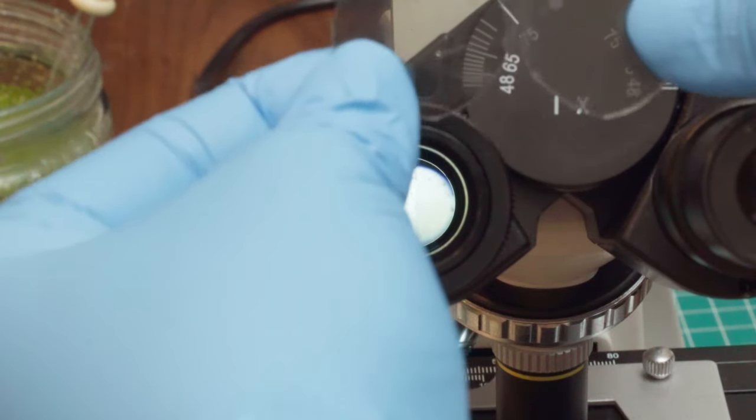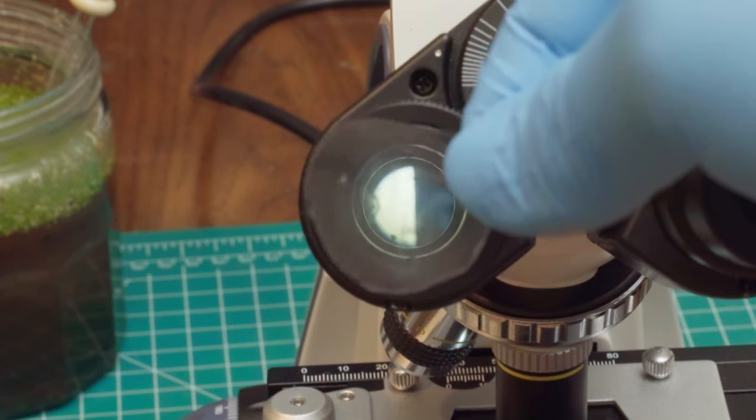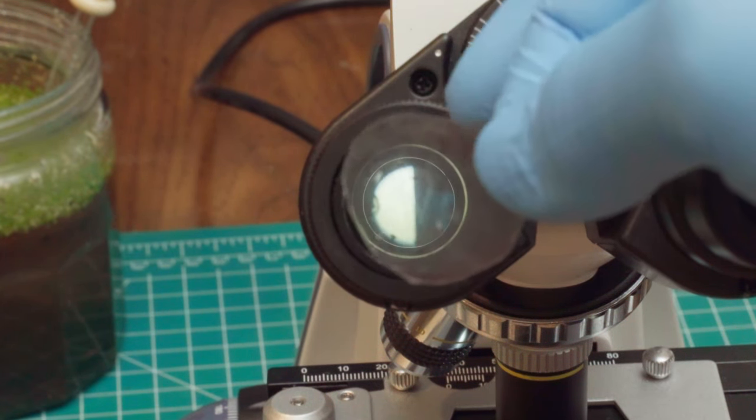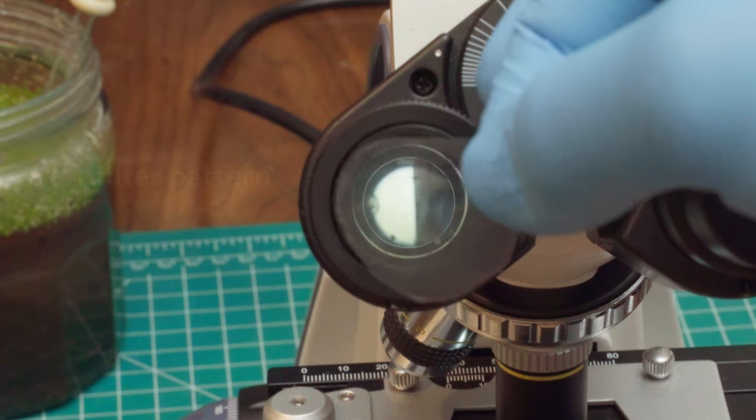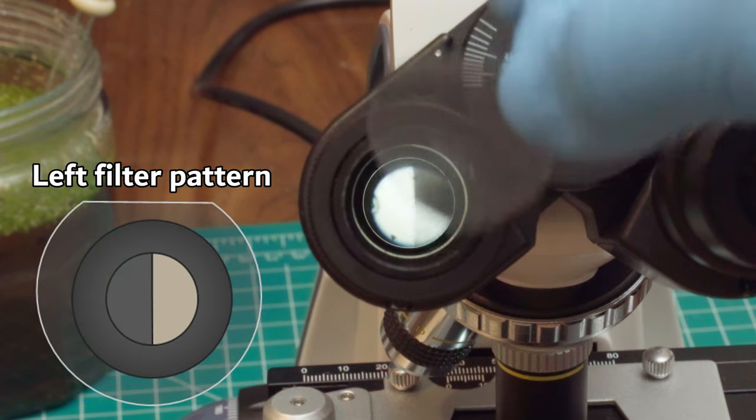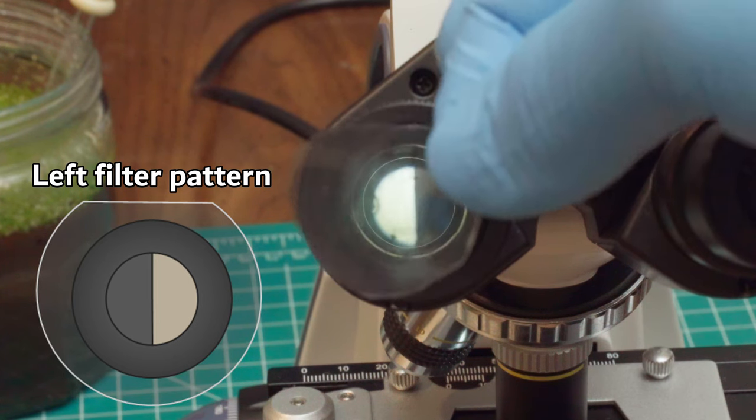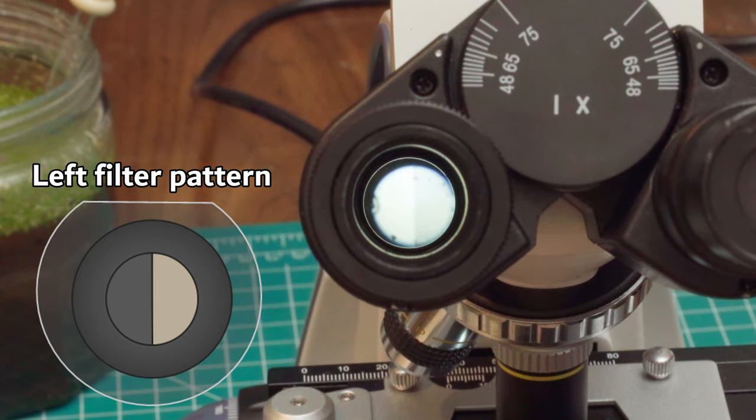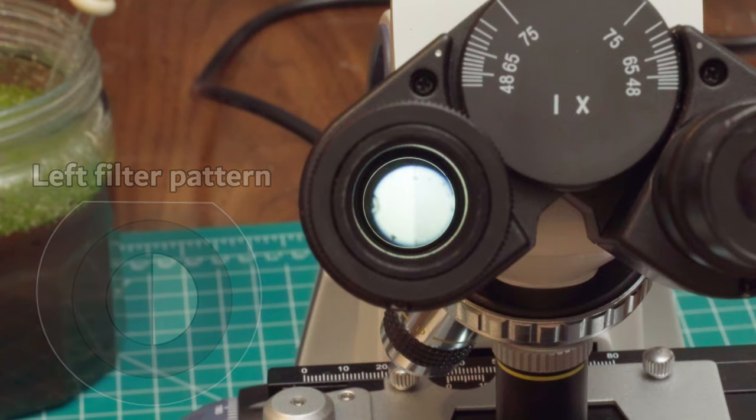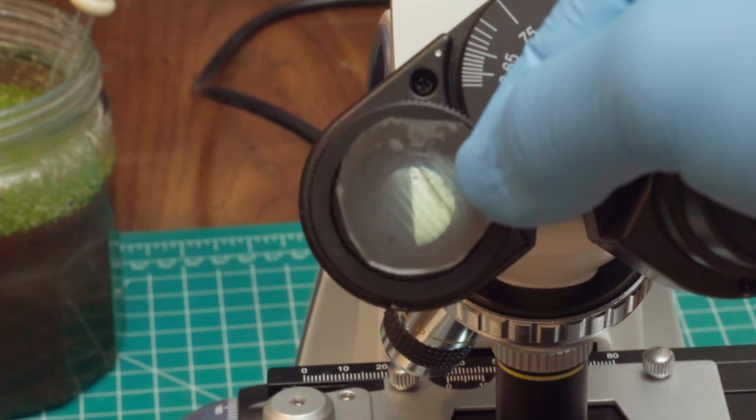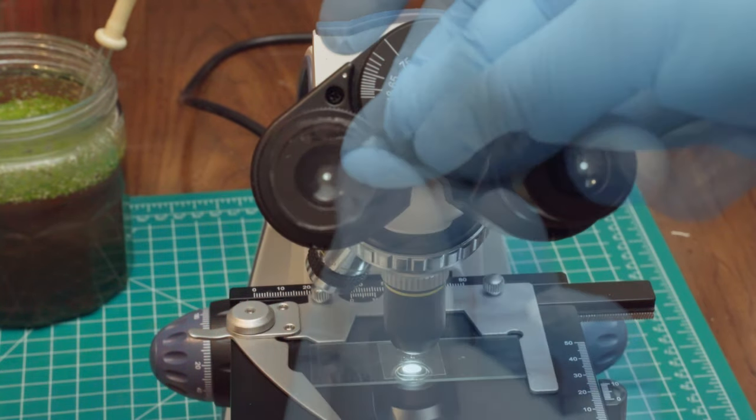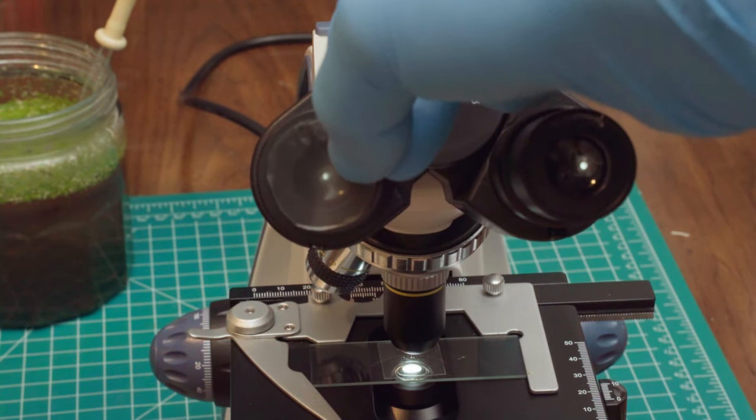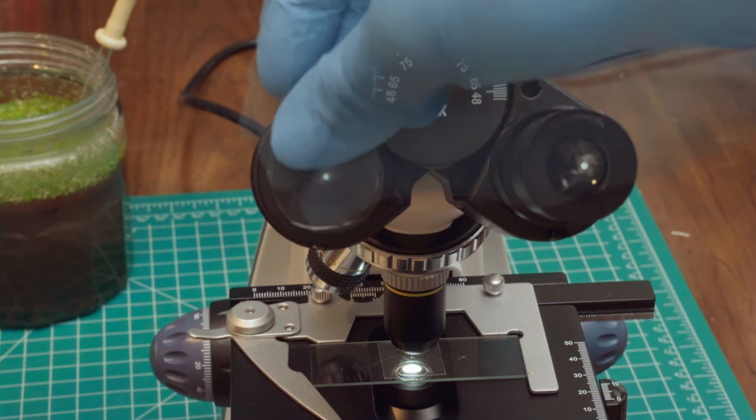Now get your eyepiece filters and, with the flat edge up and the F facing you, hold one up in front of the left eyepiece tube. What we want to see is the left semicircle turn dark. In this case, the right semicircle turned dark, which means this is the filter for the right eyepiece. If I grab the other filter, then I should see the correct pattern. When you find the correct filter, take the rear backing film off and stick it to the eyepiece with flat edge up and remove the remaining protective film.